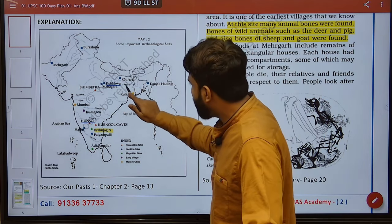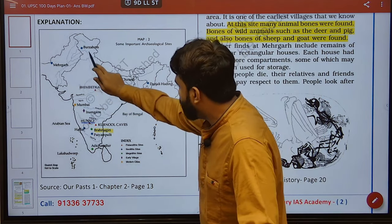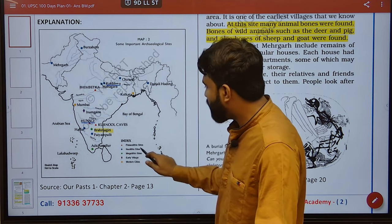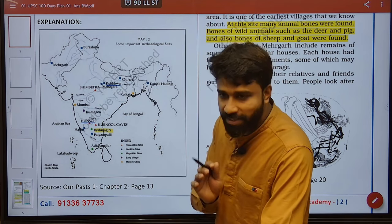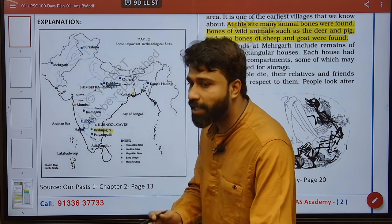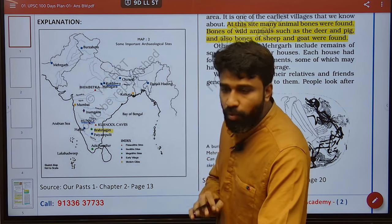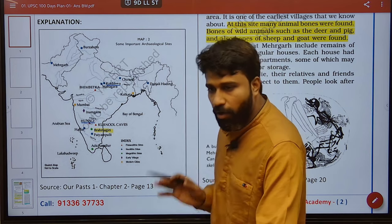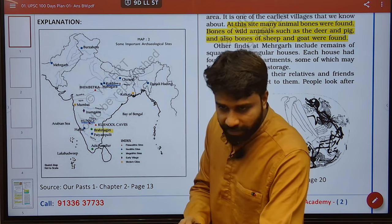Next — Koldigwa, Chirand, Mehergar, Burzahom — these are Neolithic sites in which the domestication of animals already happened, and settled communities who followed agriculture also started in these Neolithic sites.